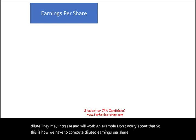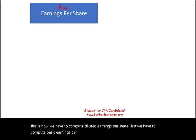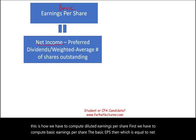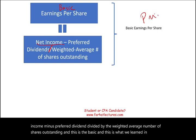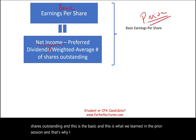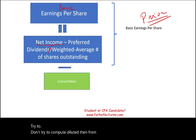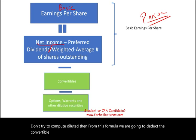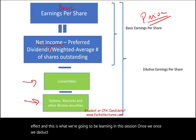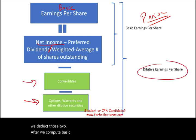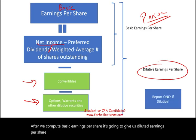This is how we compute diluted earnings per share. First, we compute basic earnings per share — the basic EPS — which is equal to net income minus preferred dividend, divided by the weighted average number of shares outstanding. Then from this formula, we are going to account for the convertible effect, and then the options and warrant effect. Once we do those two adjustments after computing basic EPS, it gives us diluted earnings per share. We only report the diluted EPS if it is lower than the basic.